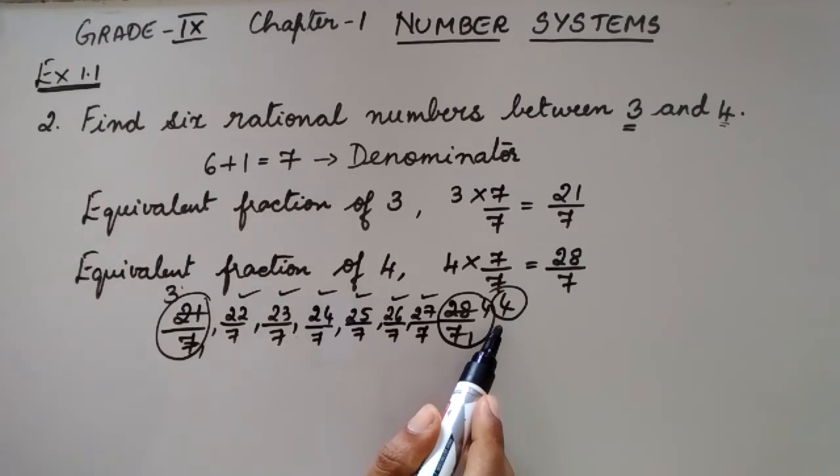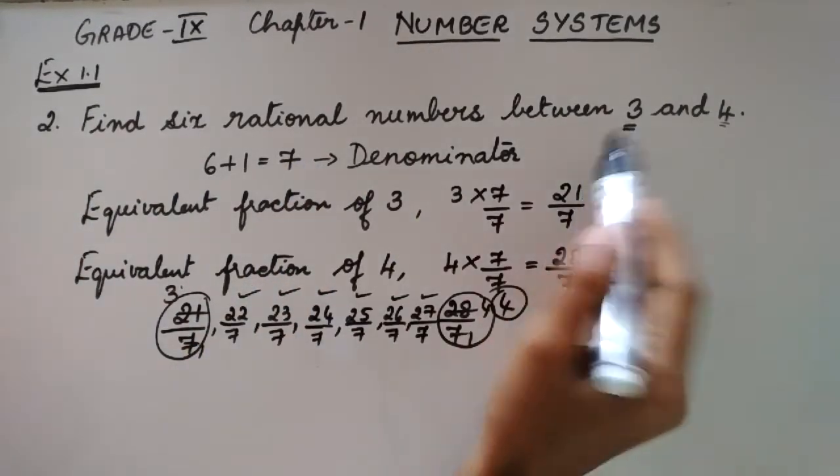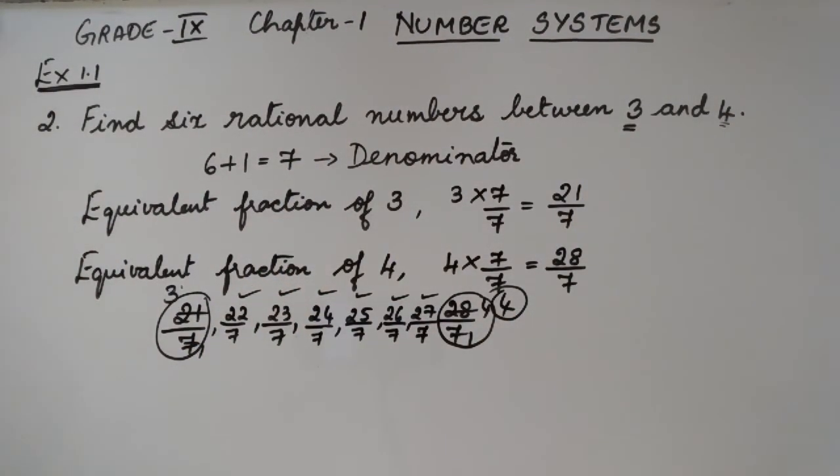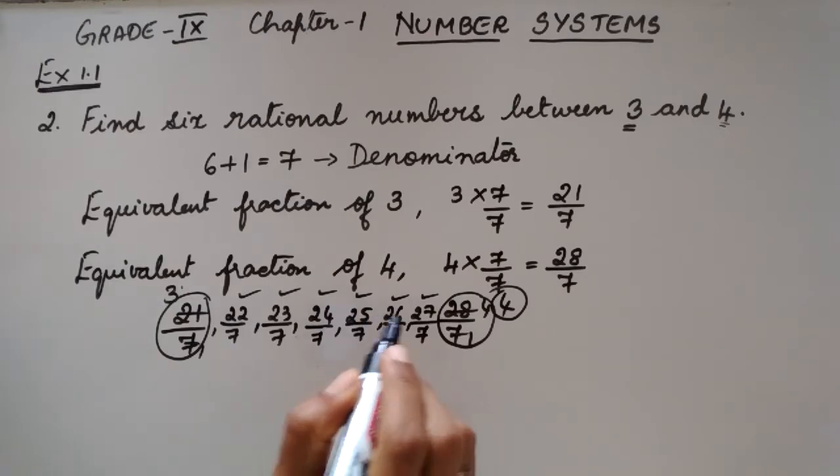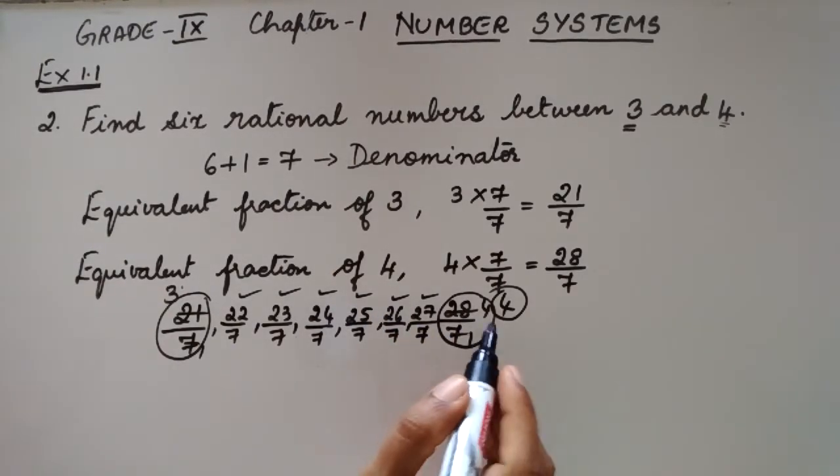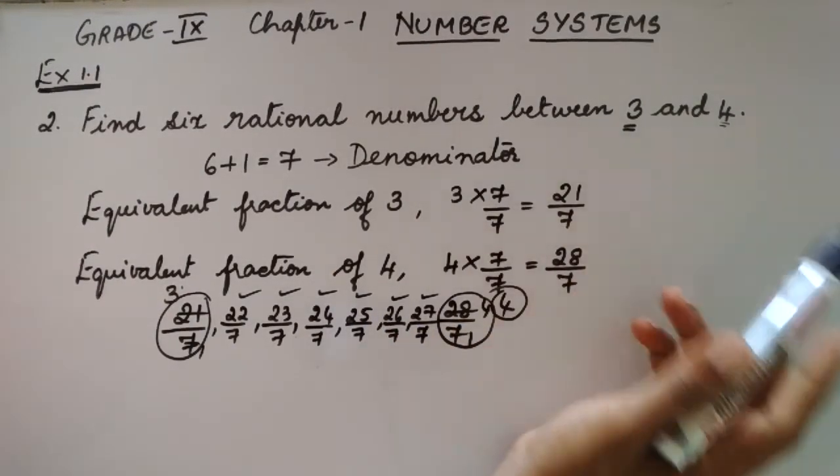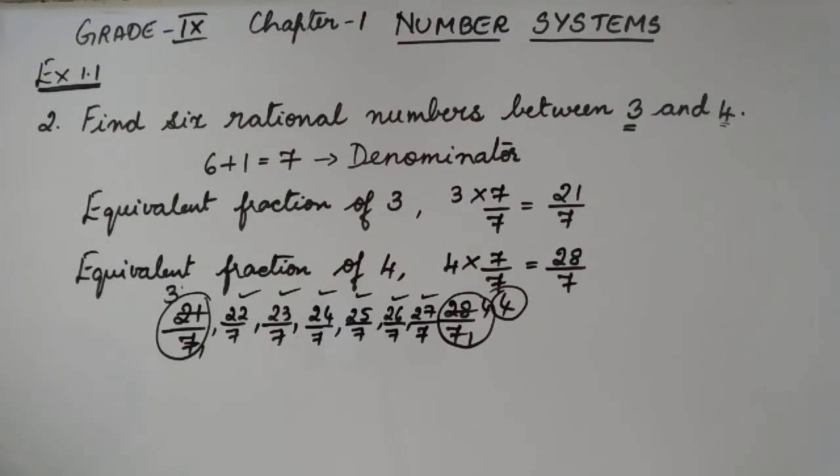This is using the equivalent fractions. We have to find the rational numbers between any two numbers. Even using this method, you can also find the rational numbers between 1 and 2, the problem which I have solved in the last class.